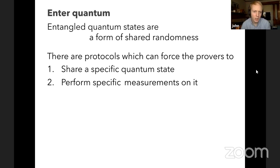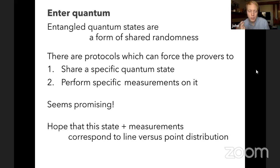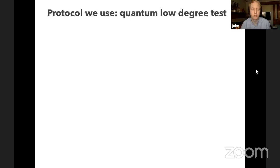The source of shared randomness we'll use is entangled quantum states. Entangled quantum states are a form of shared randomness between two parties. The way we're going to use them is via self-testing protocols, like those seen in Andrea's and Anand's talks. These protocols give the verifier control over the prover state and how they interact with it — forcing the provers to share a specific quantum state and to perform specific quantum measurements on it.